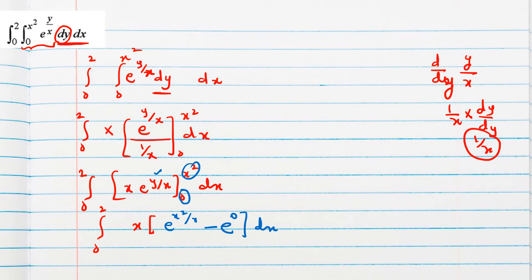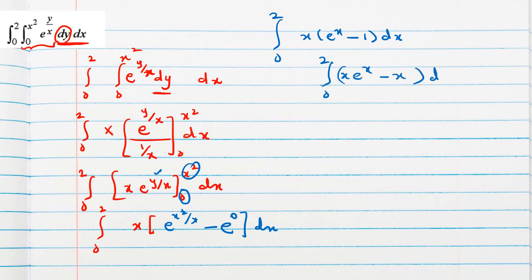So 0 to 2, x and here 1 by x we can cancel, minus e power 0 is 1. So this full function has become a function in the form of x. We can separate the integral.